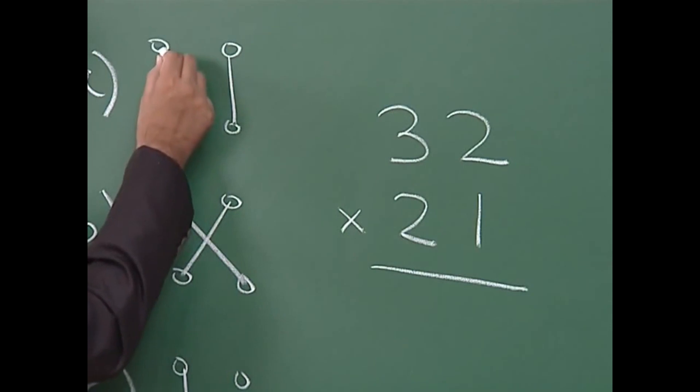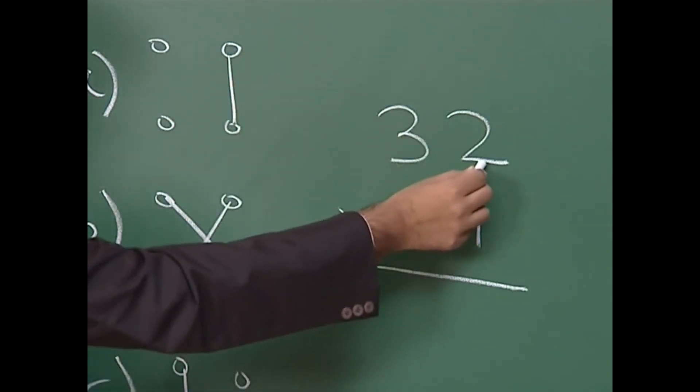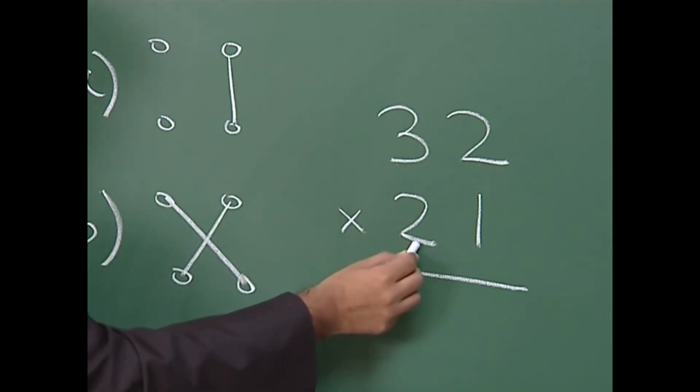Then this dot represents 3, this dot represents 2, this dot represents this 2 and this dot represents 1.